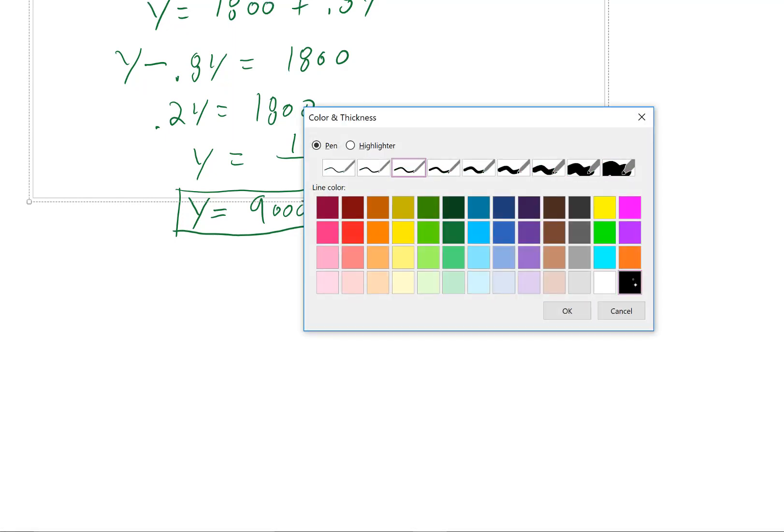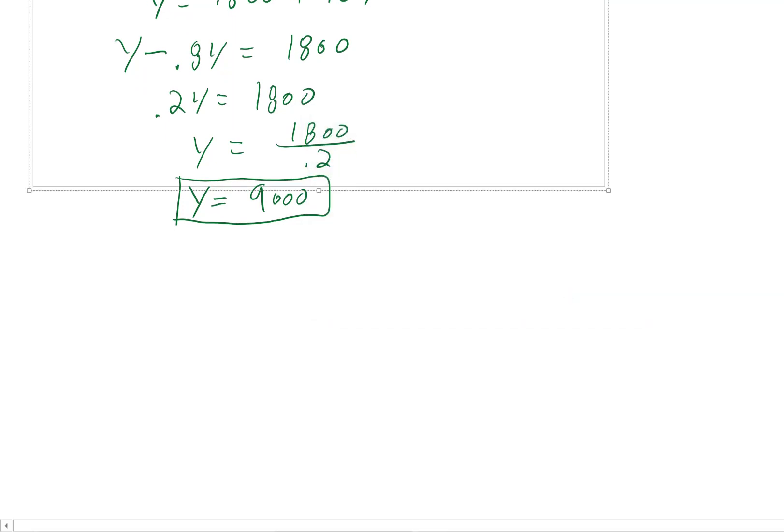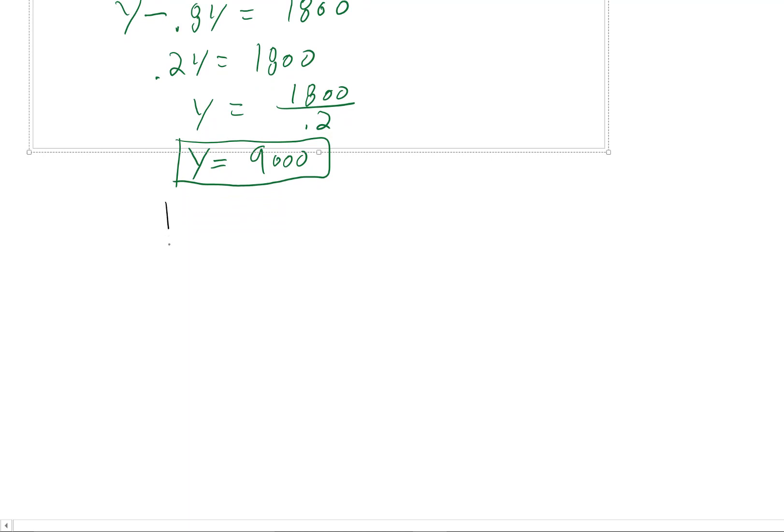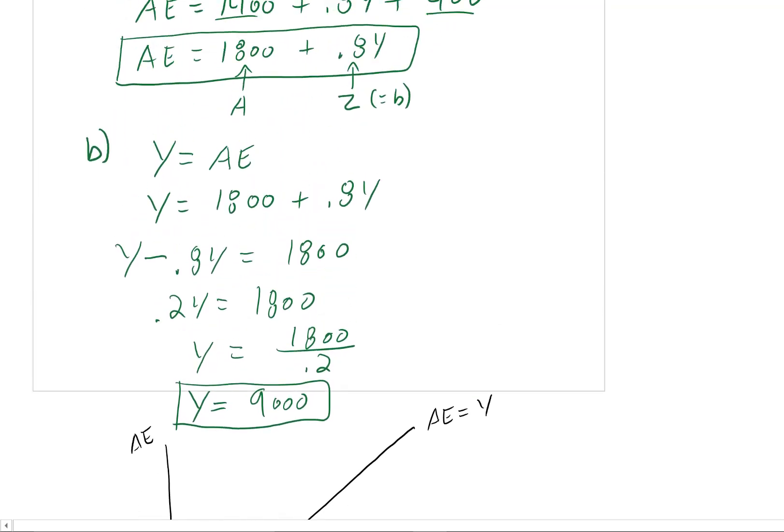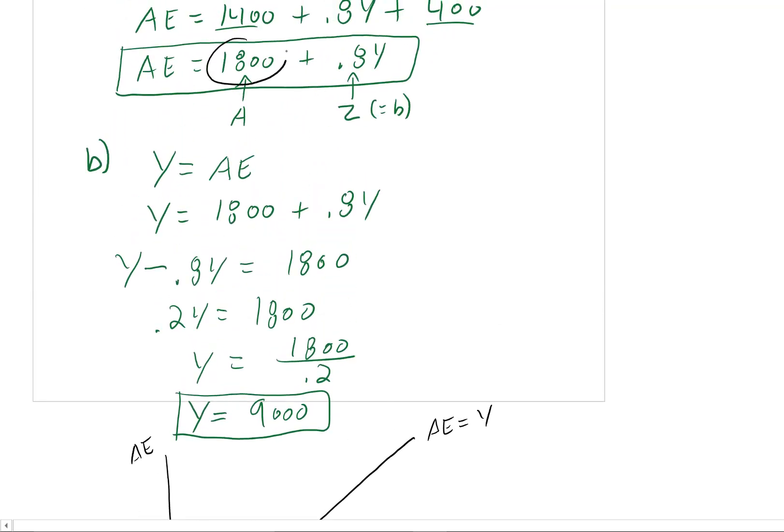The question doesn't ask us to do this, but I think it's just helpful to remind ourselves what we're doing here. And so we have our axis here, AE and Y. We have our equilibrium condition that we always put on, AE equals Y. And now we have this AE function. So if we scroll up, we can see that the intercept of this AE function is 1800.